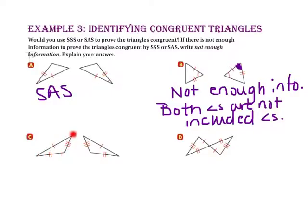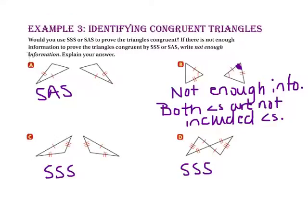In part C, we have three sides congruent to three sides, giving us side-side-side congruence. In part D, we also have three sides congruent to three sides, so we have side-side-side congruence. Additionally, this angle is congruent to the corresponding angle because they are vertical angles, giving us one side, an included angle, and a second side congruent to one side, an included angle, and a second side — so we also have side-angle-side congruence.